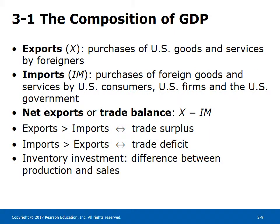Exports X represent purchases of U.S. goods and services by foreigners, such as foreigners spending money at Disney World in Florida or buying a car made in the U.S. Imports IM represent purchases of foreign goods and services by U.S. consumers, firms, and the government, such as clothing made in China, machines made in Germany, or Americans spending money on foreign travel. Net exports or trade balance is given by X minus IM. If exports exceed imports, there is a trade surplus; if imports exceed exports, there is a trade deficit. Inventory investment is the difference between production and sales, added to fixed investment to get actual as opposed to planned investment.